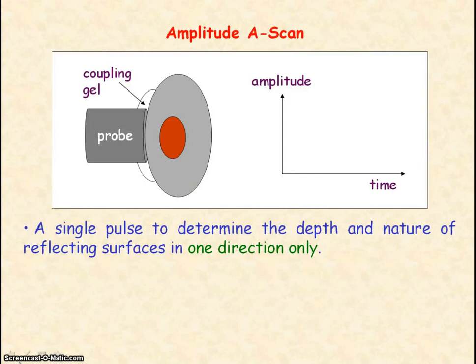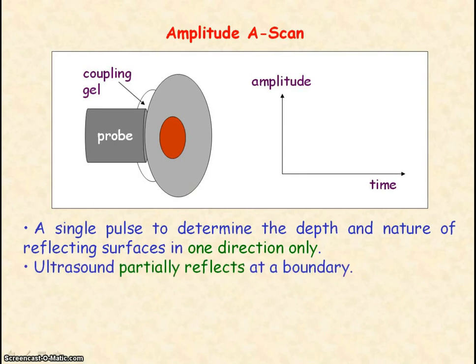In an ultrasound A scan, a single pulse is used to determine the depth and nature of internal structures, but it only provides information in one direction because we're using a single pulse. The ultrasound is partially reflected at a boundary, and the intensity of the reflected ultrasound is displayed as an amplitude signal on a cathode ray oscilloscope.